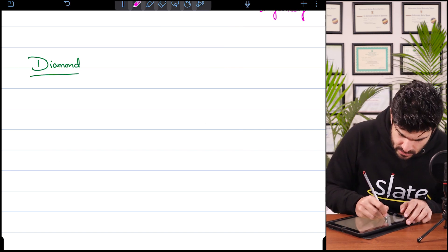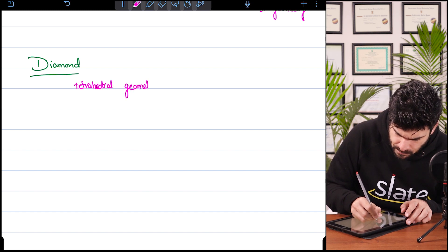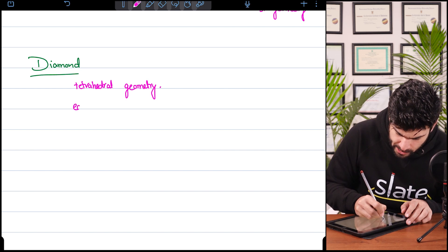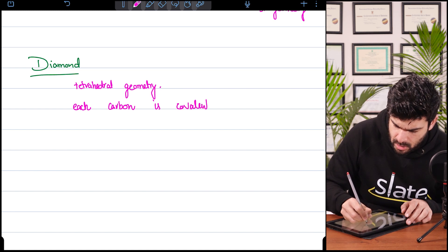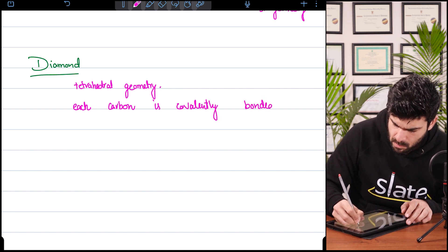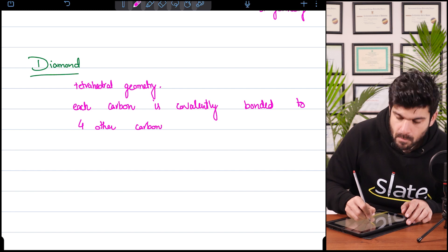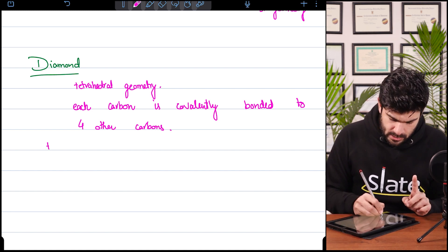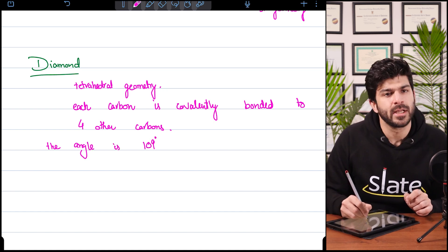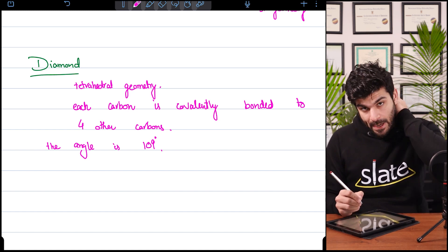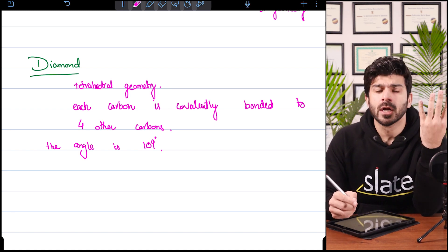Diamond has a tetrahedral geometry where each carbon is covalently bonded to four other carbons. The angle between those carbons is 109 degrees. Each carbon is bonded to four other carbons because carbon has a valency of four.